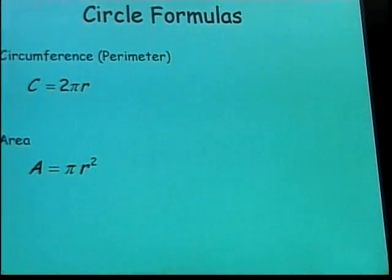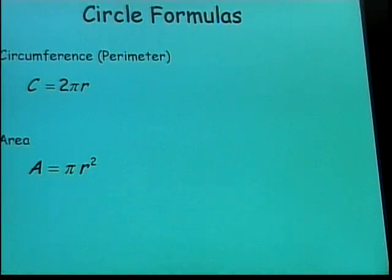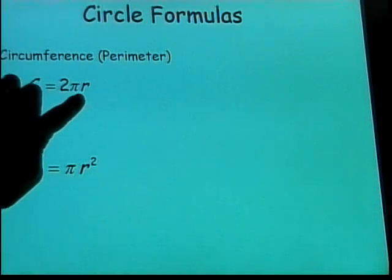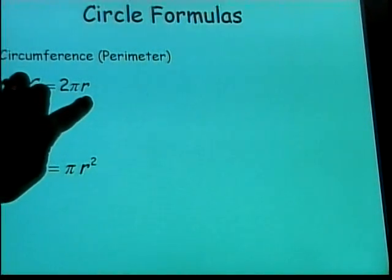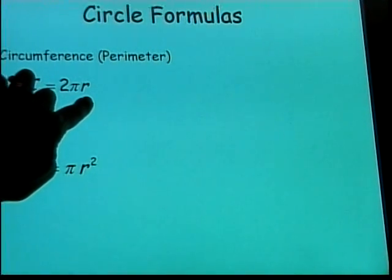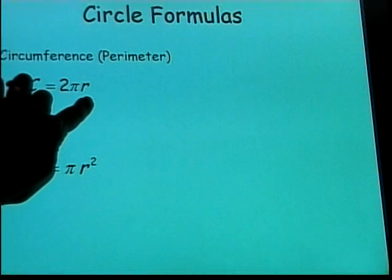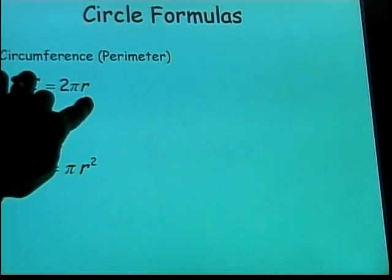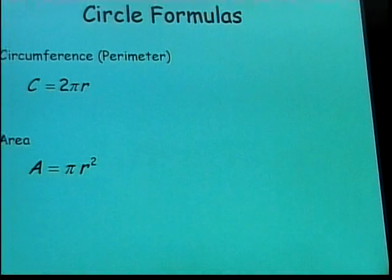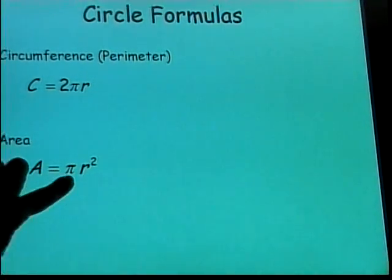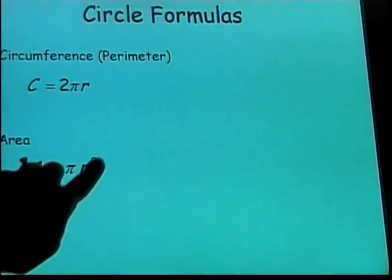Now for our circle formulas. The circumference of a circle — which is the same as its perimeter — equals two times pi times r, where r is the radius, the distance from the center of the circle to its outside edge. The area of a circle is pi times the radius squared.